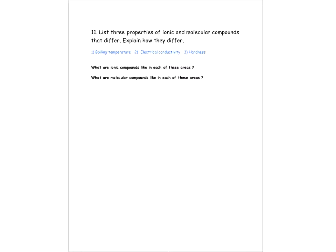Do you remember with ionic compounds how they rate in each one of these categories — like boiling temperature, electrical conductivity, and hardness? Would they have a low or high boiling temperature? It's actually a high boiling temperature, because for something like salt, it's really hard to boil or to melt.